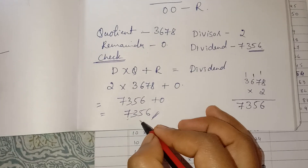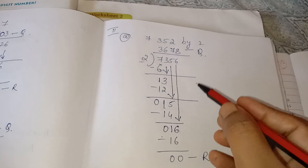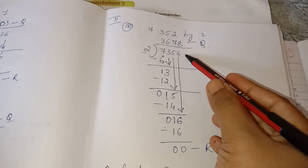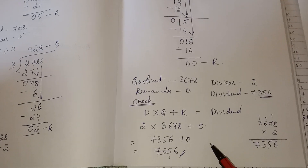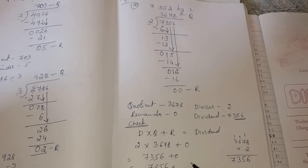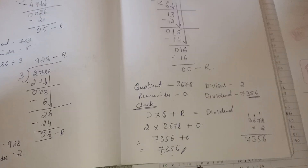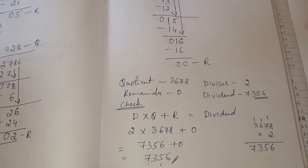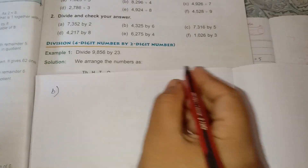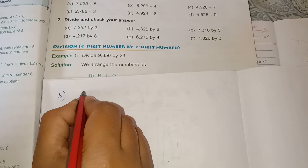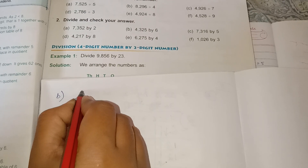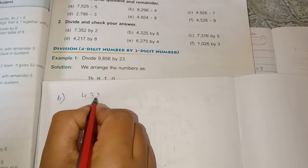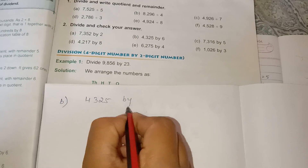The dividend is 7356. Here the dividend is 7356 — whatever we have done is correct. Check your answer like this. Next, second one: 4325 divided by 6.